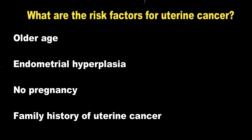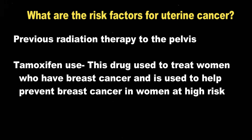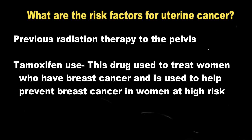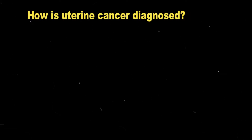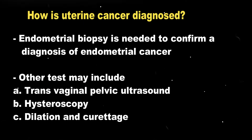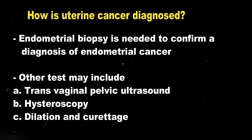Other risk factors are old age, endometrial hyperplasia, no pregnancy, and family history of uterine cancer, previous radiation therapy to the pelvis, and tamoxifen — a drug which is used to treat women who have breast cancer and also used to help prevent breast cancer in women who are at high risk.